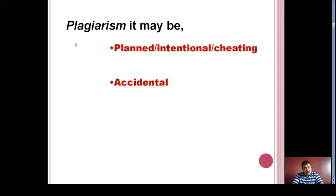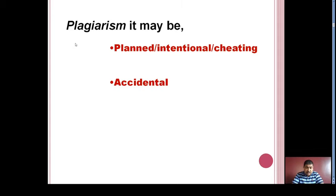Accidental plagiarism occurs when a person neglects to cite their sources, misquotes their sources, or unintentionally paraphrases a source by using similar words, groups of words, or sentence structure without attribution. This type of accidental plagiarism may occur due to failure to use quotation marks or failure to give proper credit to the work.